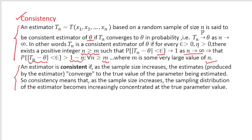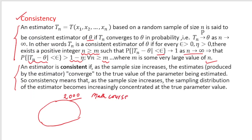Let's understand in general terms, in a layman approach. An estimator is consistent if as the sample size increases, the estimate produced by the estimator converges to the true value of the parameter being estimated. To understand this, let us take this example: suppose in a university there is a large population of 2000 students, and they have all taken an exam related to any mathematics course.